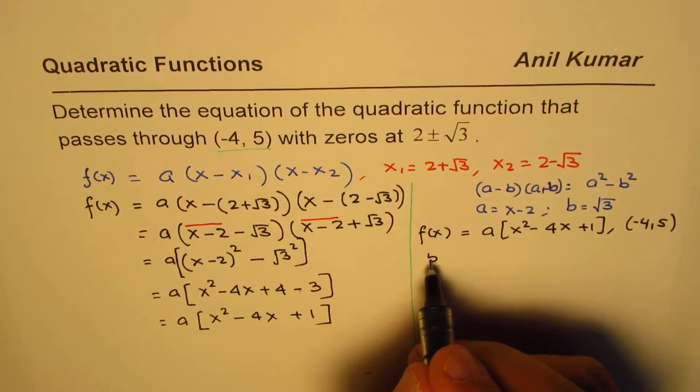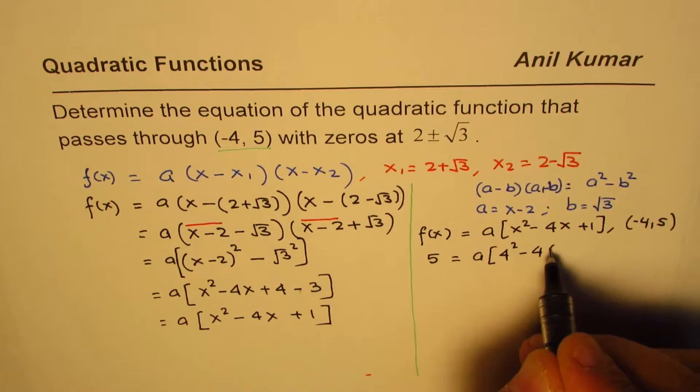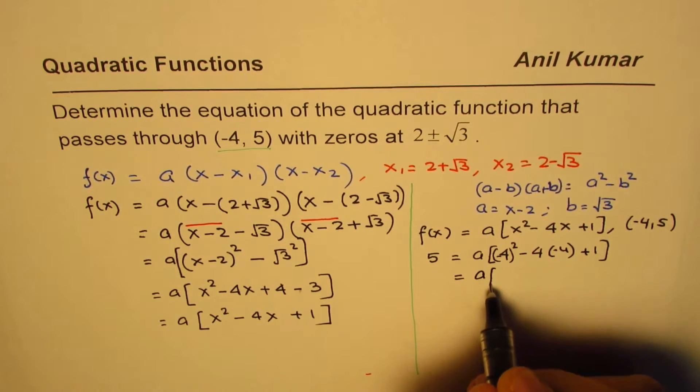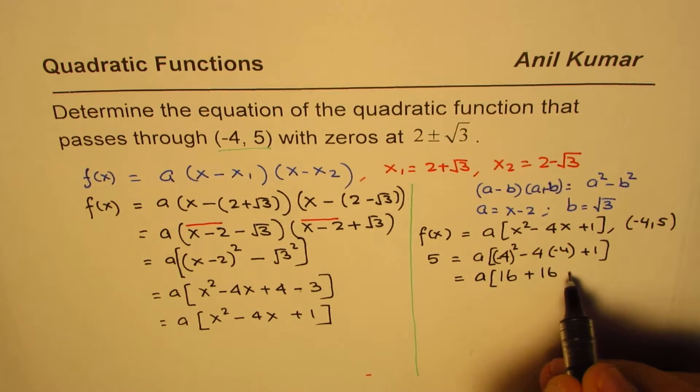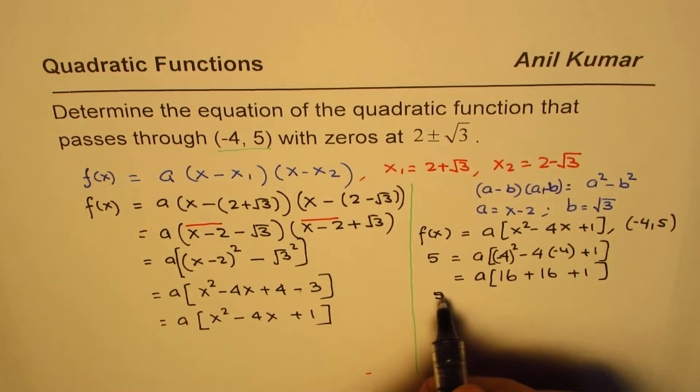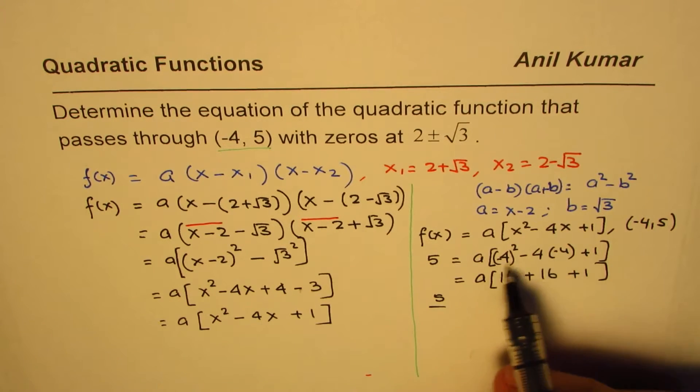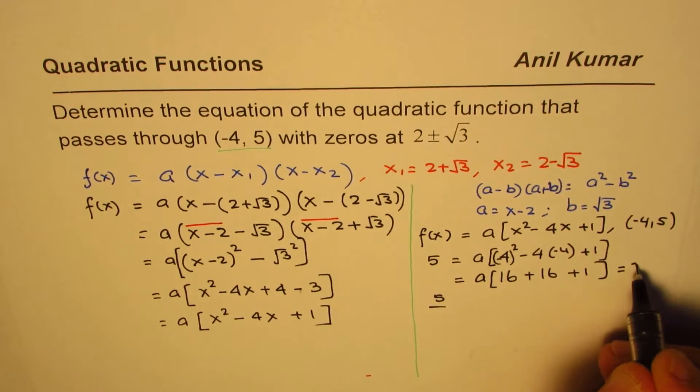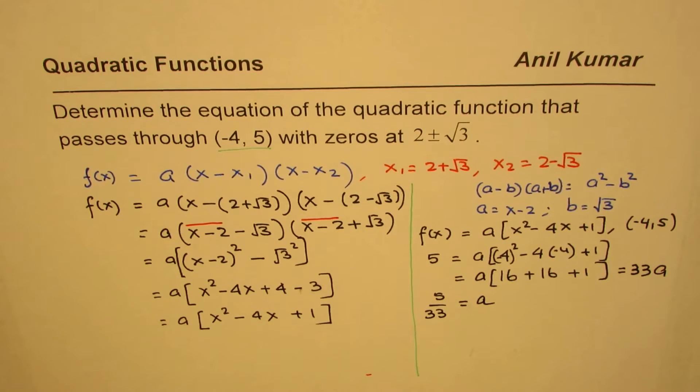5 is the y value and -4 is the x value. So 5 = a[(-4)² - 4(-4) + 1]. That is a times [16 + 16 + 1]. So we have 5 = 33a. Dividing by 33, we get 5/33 = a.